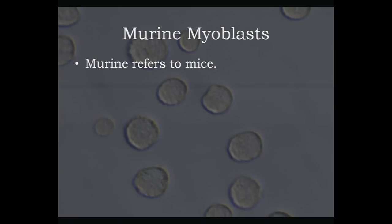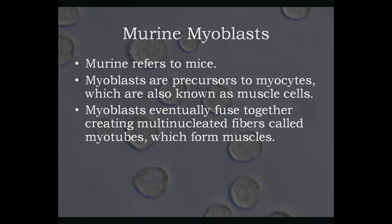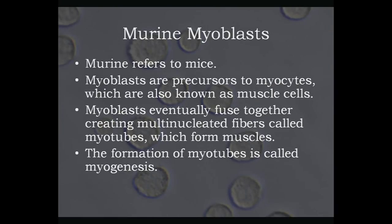Here is some background information on murine myoblasts. Murine refers to mice. Myoblasts are precursors to myocytes, which are also known as muscle cells. Myoblasts eventually fuse together, creating multi-nucleated fibers called myotubes, which form muscles. The formation of myotubes is called myogenesis.